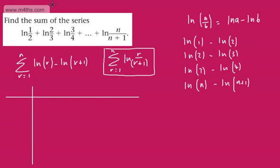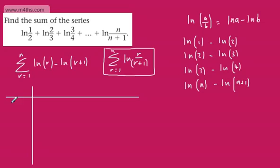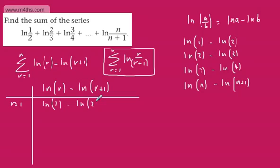We'll start with R equal to 1 and go up to R equal to N. When R is equal to 1, we're going to have the natural log of R minus the natural log of R plus 1, which gives us LN of 1 — which is 0 — minus LN of 2. Then when R is equal to 2, we'll have the natural log of 2 minus the natural log of 3. You can see this is the pattern.